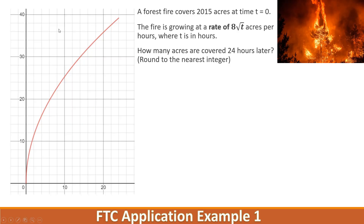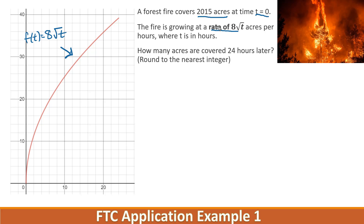The first example says a forest fire covers 2015 acres at time t equals 0. So at the very start of time, the forest fire has already covered 2015 acres. The fire is growing at a rate — this is the important part because this is what you're graphing. This is my actual derivative, my rate, and it's in acres per hour. How many acres are covered 24 hours later?